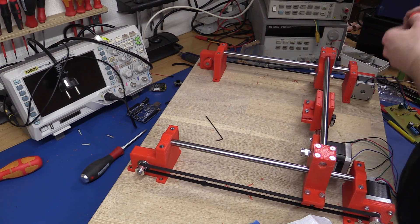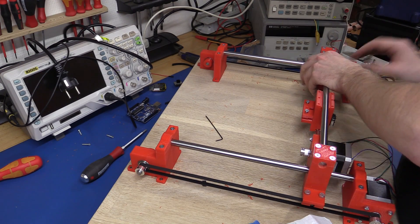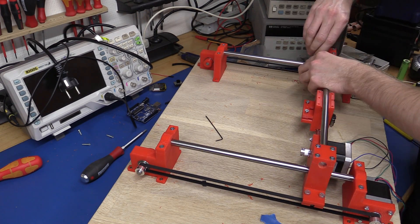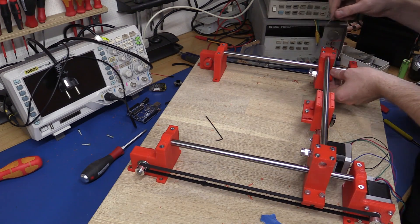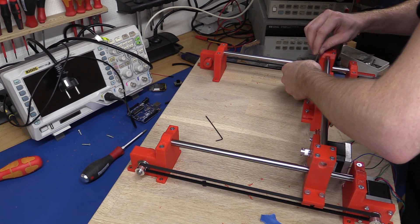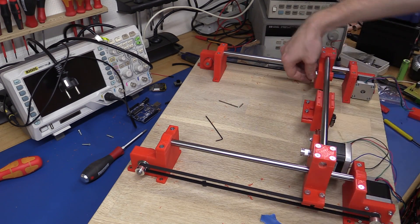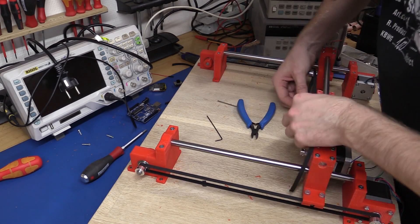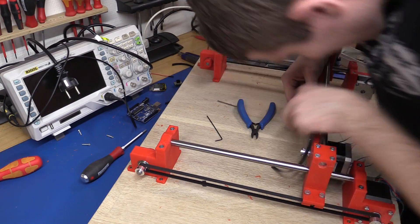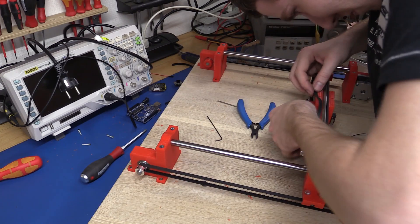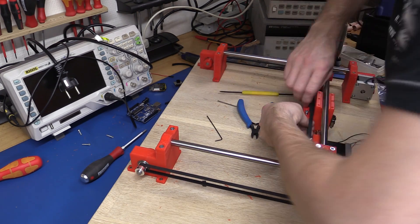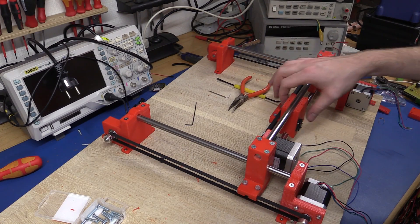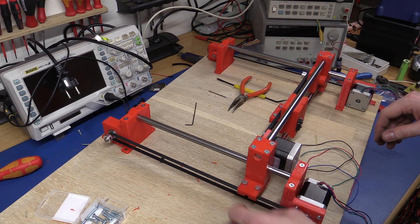So now we can go and install the belt. And first we need to fasten the pulleys. And the one on the x-axis here is the easy one.